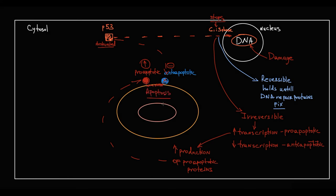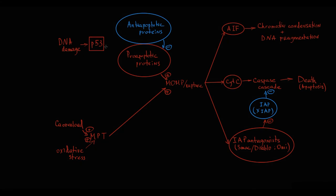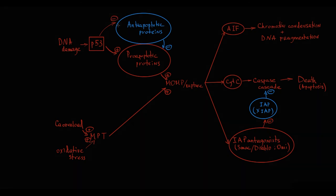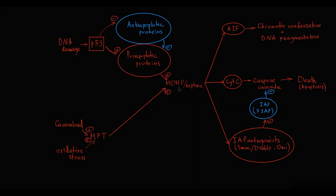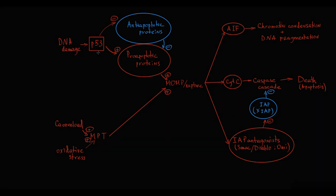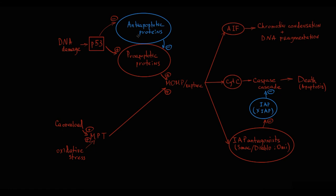So in the case of DNA damage, p53 becomes activated, and by increasing transcription of pro-apoptotic proteins and decreasing transcription of anti-apoptotic proteins, it induces mitochondrial outer membrane permeabilization that leads to apoptosis. Because p53 plays the key role in this pathway, it is also called p53-activated apoptosis. p53 basically decides the fate of the cell by regulating transcription of pro- and anti-apoptotic proteins.